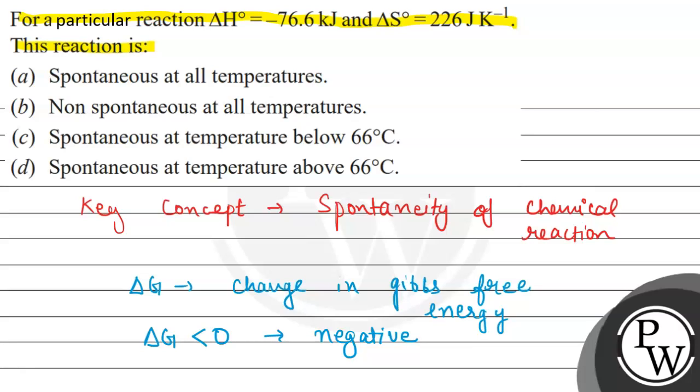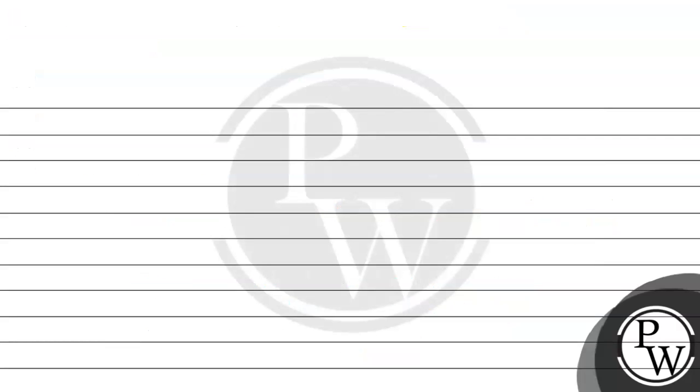Now according to the given equation, we can see ΔH° and ΔS° given, which means standard change in enthalpy and standard change in entropy are given. So we can write the formula: ΔG° = ΔH° - TΔS°, where T is the temperature.